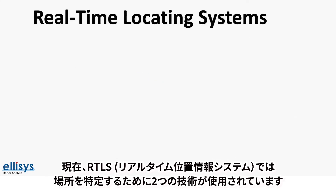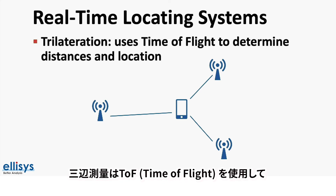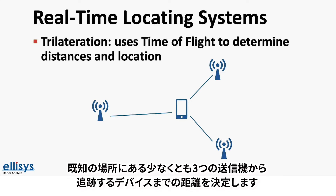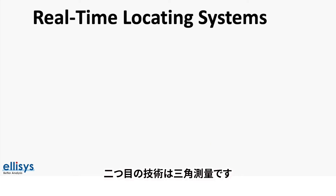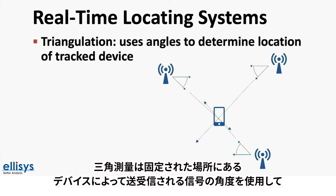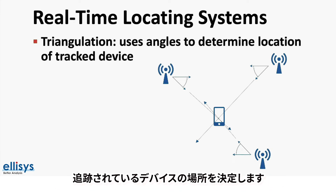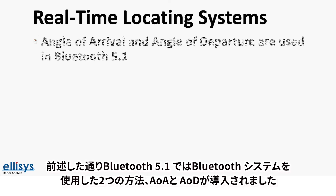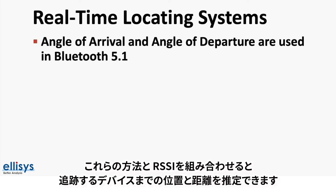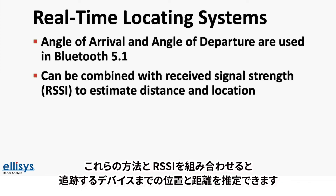In real-time locating systems, or RTLS, there are two methods used to determine location. The first is called trilateration, which uses time of flight to determine distances from at least three transmitters at known locations to the tracked device; these calculated distances are then translated into location coordinates. The second method is triangulation, which uses angles of signals sent or received by devices in fixed locations to determine the location of the tracked device. Both methods can also be combined to increase location accuracy. Bluetooth 5.1 introduces angle of departure and angle of arrival, and combining these methods with RSSI can estimate location and distance to a tracked device.